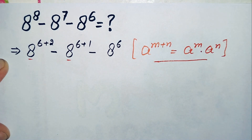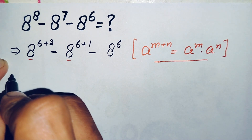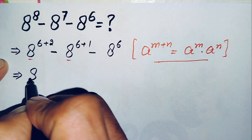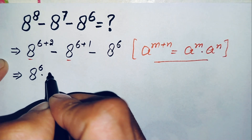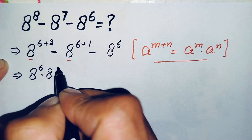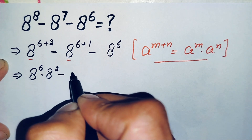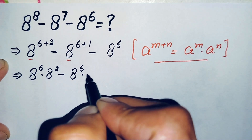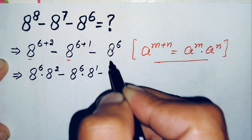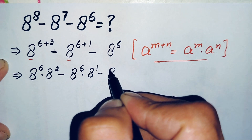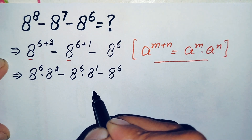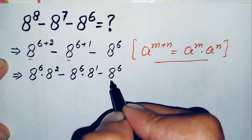Using this exponential math property, this equation will become: f raised to power 6 times f raised to power 2, minus f raised to power 6 times f raised to power 1, minus f raised to power 6.